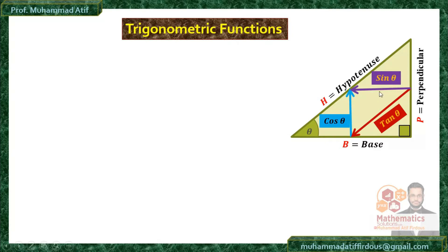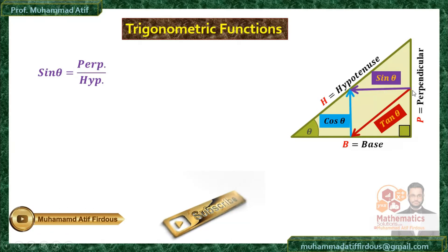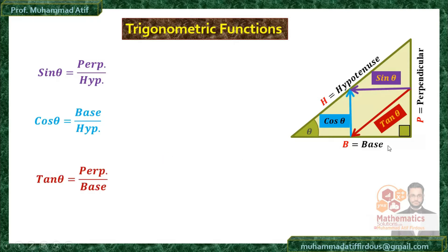I am going to use these three arrows to write the fractions of the sides. Sine theta equals perpendicular over hypotenuse — the starting point is perpendicular, ending point is hypotenuse. Cosine theta equals base over hypotenuse — starting point is base, ending point is hypotenuse. And tangent theta — starting point is perpendicular, ending point is base — so tangent theta equals perpendicular over base.